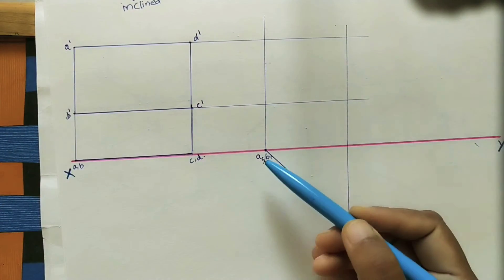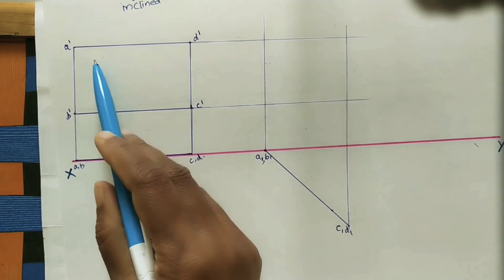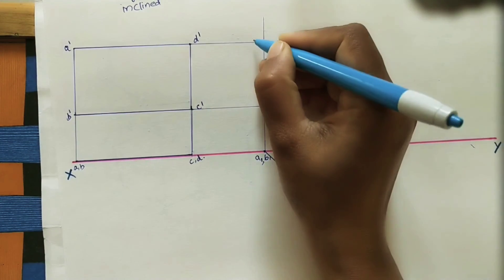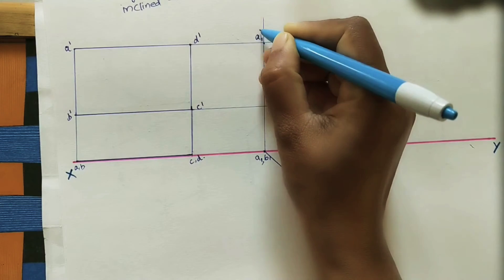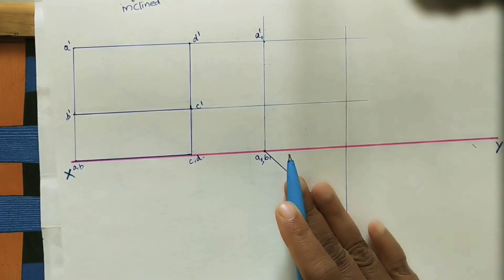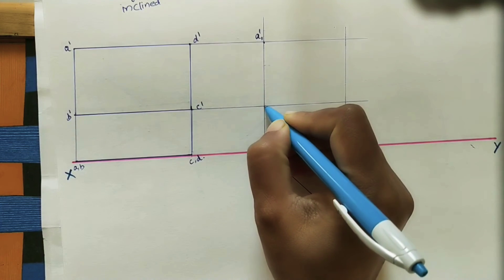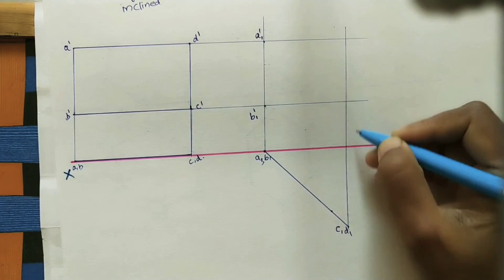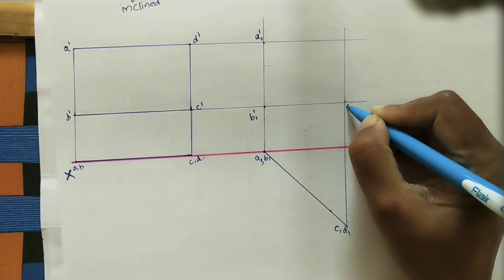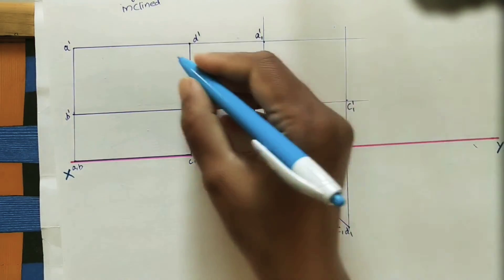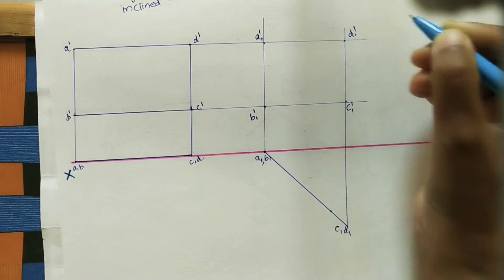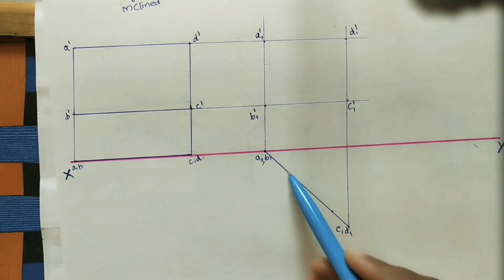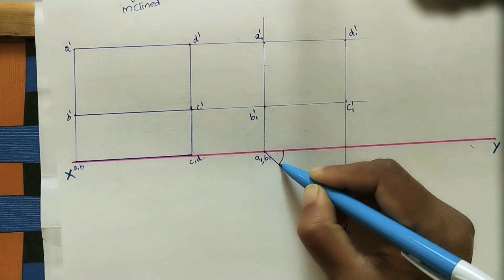Take the intersection points of the vertical and horizontal projector lines. For the front view, mark A1′ where A's vertical projector meets A's horizontal projector. Similarly mark B1′, C1′, and D1′. Join these points to get the reduced rectangle — this is the front view when the surface makes 45 degrees with the VP.